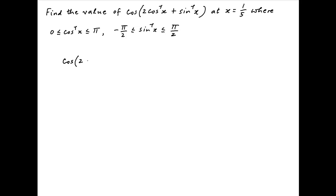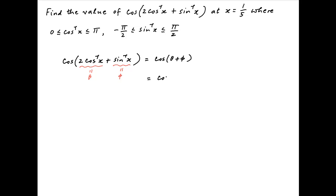The given expression is cos of 2 times cos inverse x plus sin inverse x. Let 2 times cos inverse x be equal to theta and let sin inverse x be equal to phi. Therefore the given expression can be written as cos of theta plus phi, which is equal to cos theta cos phi minus sin theta sin phi.